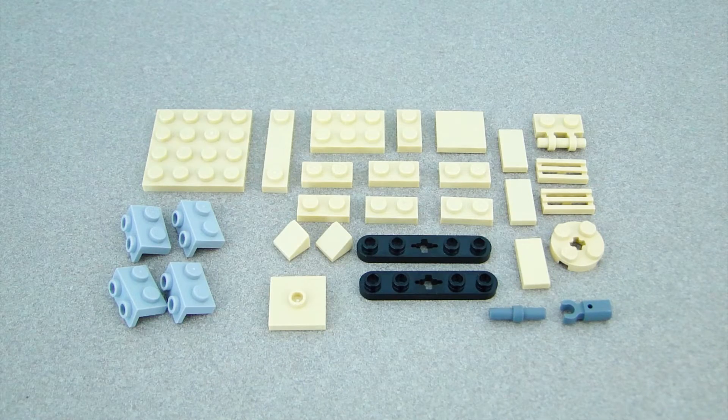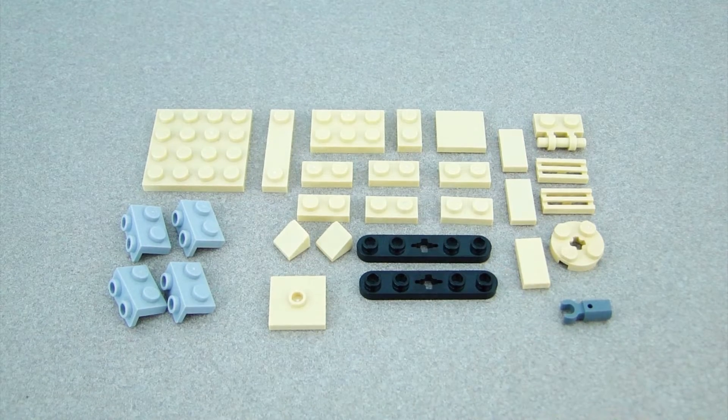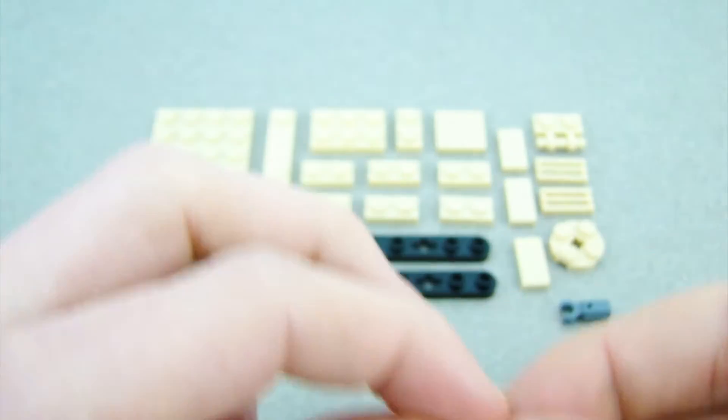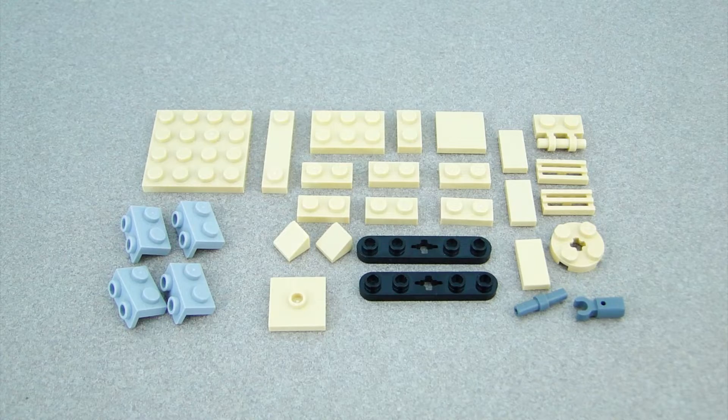Okay, so these are all the parts you'll need for the tank. These 1x5s right here might be a little bit harder to find. And this piece right here, which is like a bar with a stopper in the middle, it's a newer piece, so it might be a little bit harder to find. You can pause the video and get the pieces and then follow along.